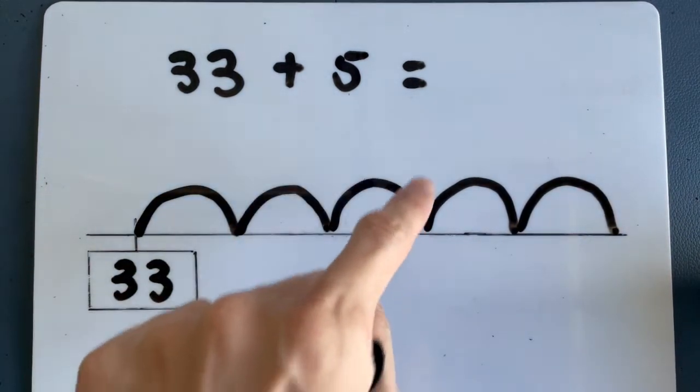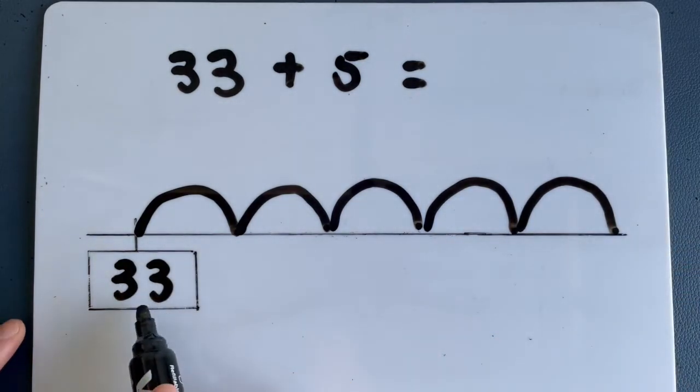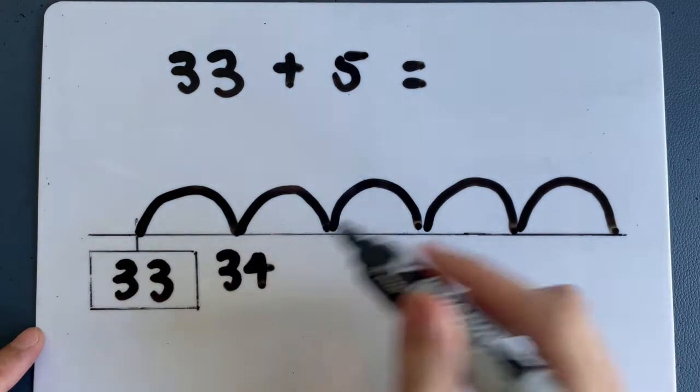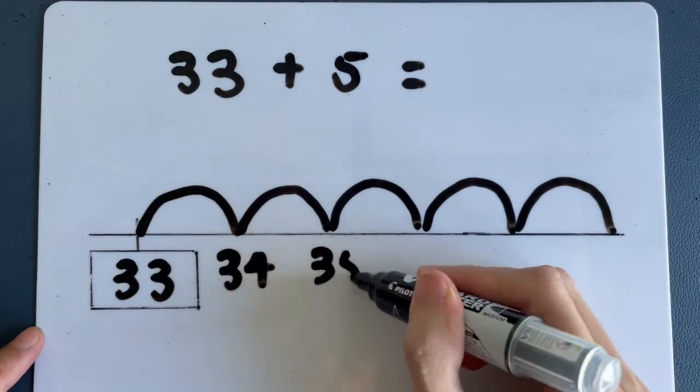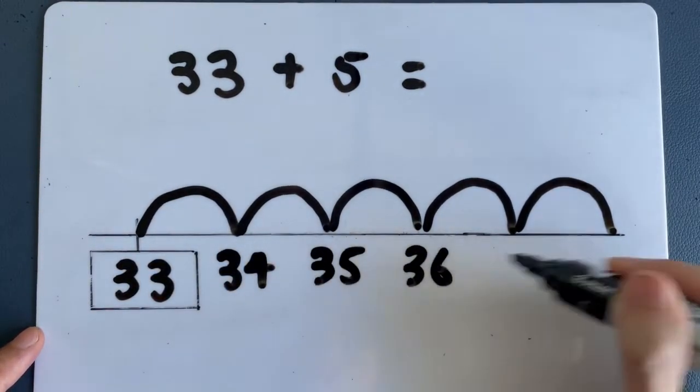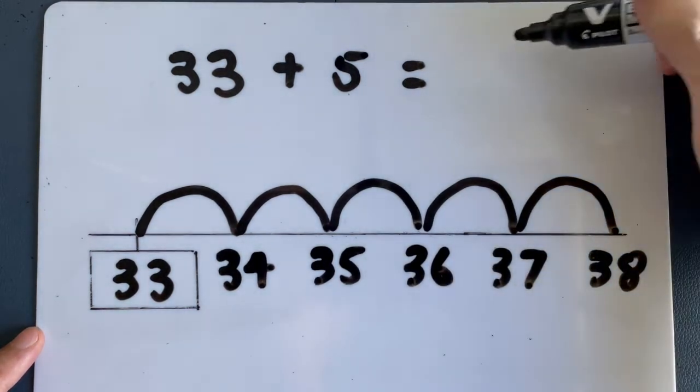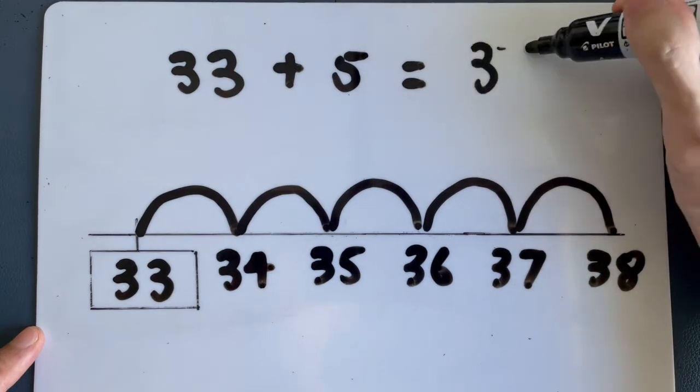1, 2, 3, 4, 5. So let's count. 33, what's next? 34, right? One more. Next one, 35, 36, 37, and 38. So the answer here is 38.